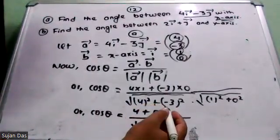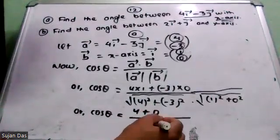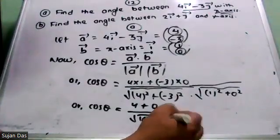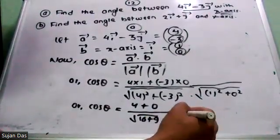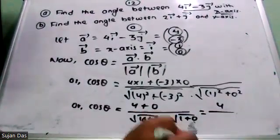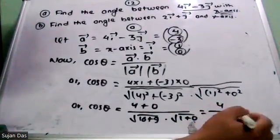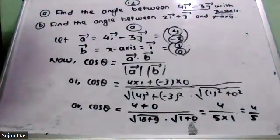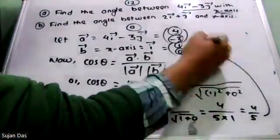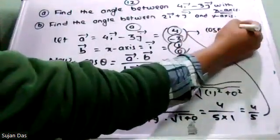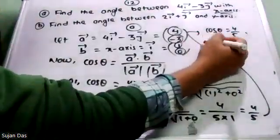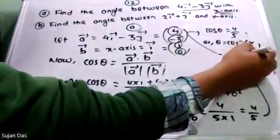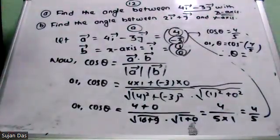So: 4×1 + (−3)×0 = 4 + 0 = 4. Divided by root of (4² + 3²) times root of (1² + 0²) — that is root(16+9) times root(1) = 5 × 1 = 5. So cos θ = 4/5. Therefore θ = cos⁻¹(4/5). You can do this in a calculator.